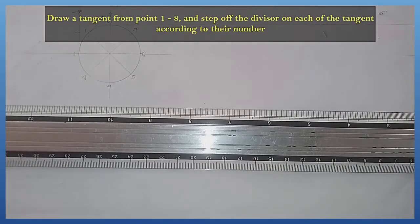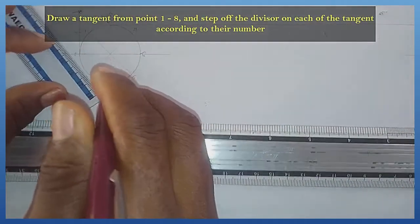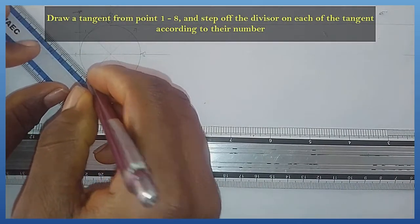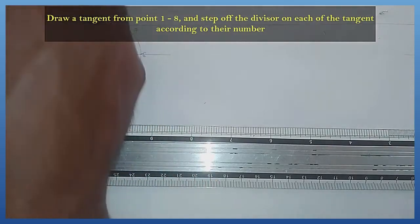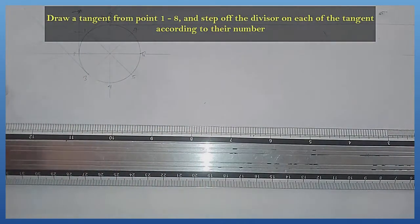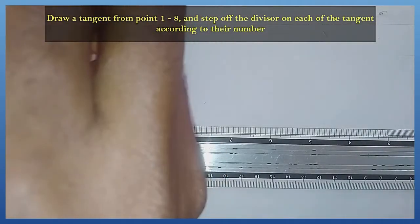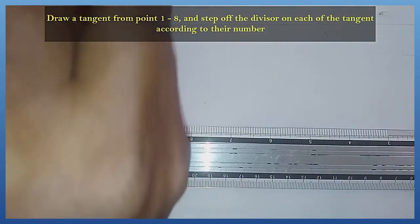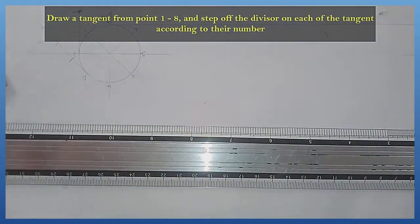On point number 3, I'm going to draw the tangent on point number 3 in this way. And I'm going to strike the divisor and step it off 3 times: 1, 2, and 3.